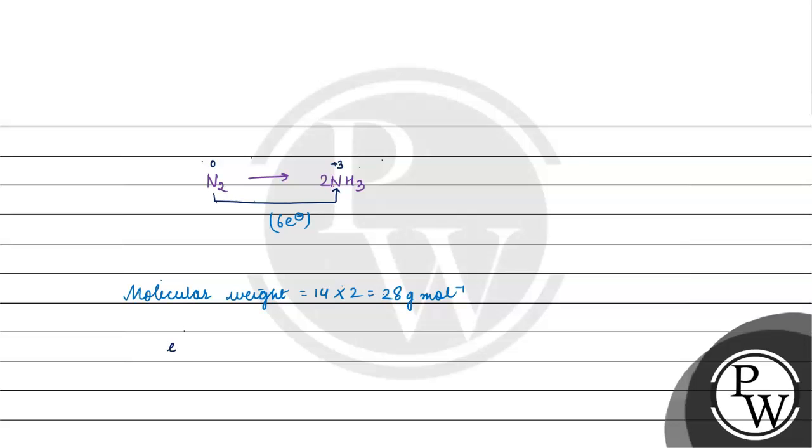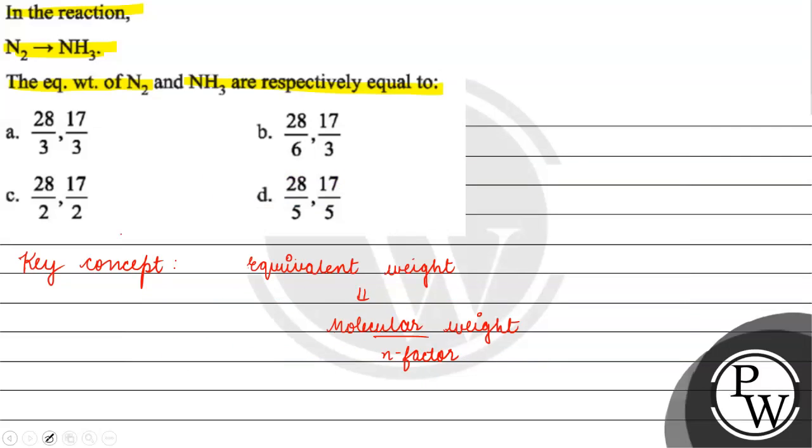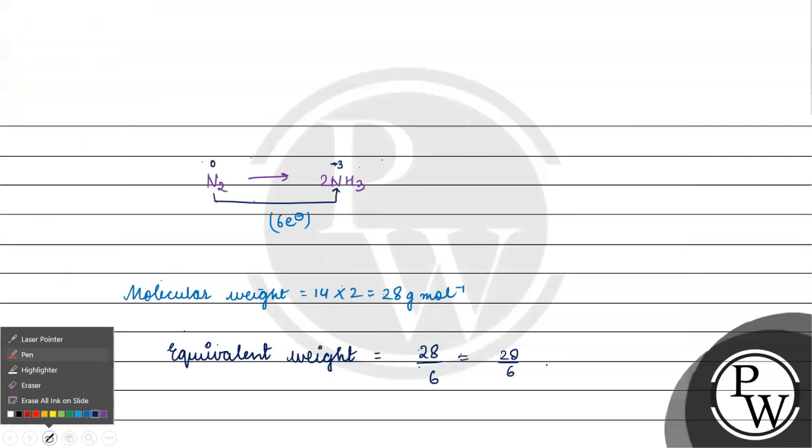Now we have to find the equivalent weight. In nitrogen, basically how many electrons are involved? 6 electrons are involved. The equivalent weight of nitrogen will be equals to its molecular weight by the number of electrons involved. So equivalent weight of N2 will be equals to 28 by 6.